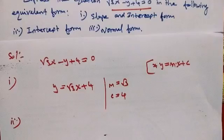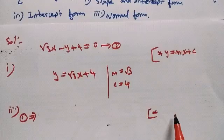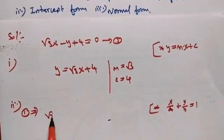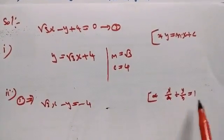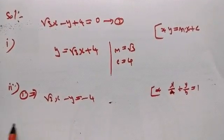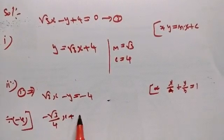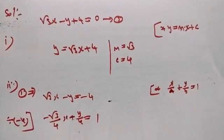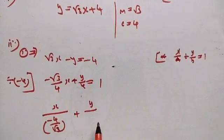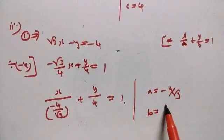Next is the second form: intercept form. The intercept form is x by a plus y by b equal to 1. Starting from √3x minus y equal to minus 4, divide both sides by minus 4. We get: x divided by (minus 4 by √3) plus y divided by 4 equal to 1. So here, a equal to minus 4 by √3 and b equal to 4.